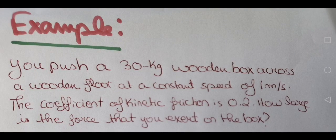For example: you push a 30 kilogram wooden box across a wooden floor at a constant speed of 1 meter per second. The coefficient of kinetic friction is 0.2. How large is the force that you exert on the box? In this example, the wooden box is moving, so the friction is kinetic and not static.